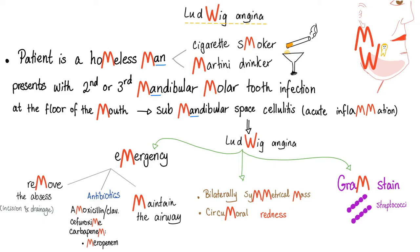Emergency management: remove the abscess with incision and drainage. Antibiotics such as amoxicillin-clavulanic acid, cefuroxime, or a carbapenem such as meropenem. And of course, maintain the airway. That covers everything you need to know about Ludwig Angina in just one slide with a crazy mnemonic — only with Medicosis Perfectionelis, because here medicine makes perfect sense.